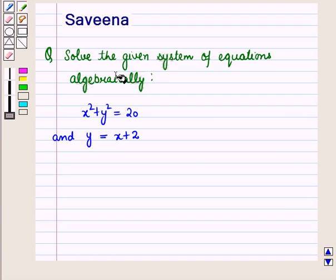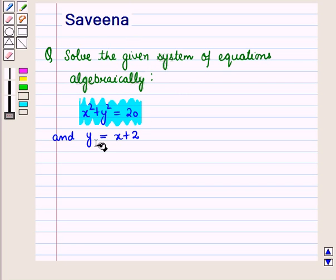Hello and welcome to the session. In this session we will discuss a question which says: Solve the given system of equations algebraically. The equations are given as x squared plus y squared is equal to 20, and y is equal to x plus 2.